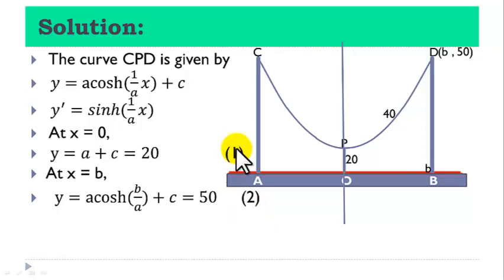Now, let us subtract equation 1 from 2 to obtain cosh b over a is equal to 30 over a plus 1.